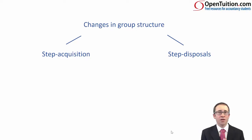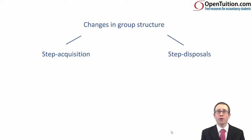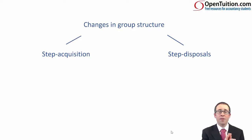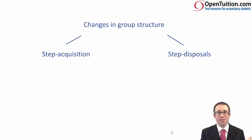If we think about a step acquisition first, that's whereby we acquire shares in stages of a business. Maybe we don't have enough cash to fully gain control of an entity in one go, so we need to buy the shares step by step. One year we buy, say, 30%, and then the next year we buy another 40%, which now gives us 70% and control. It's about looking at how we account for when we bought the 30% initially and then the additional 40%.